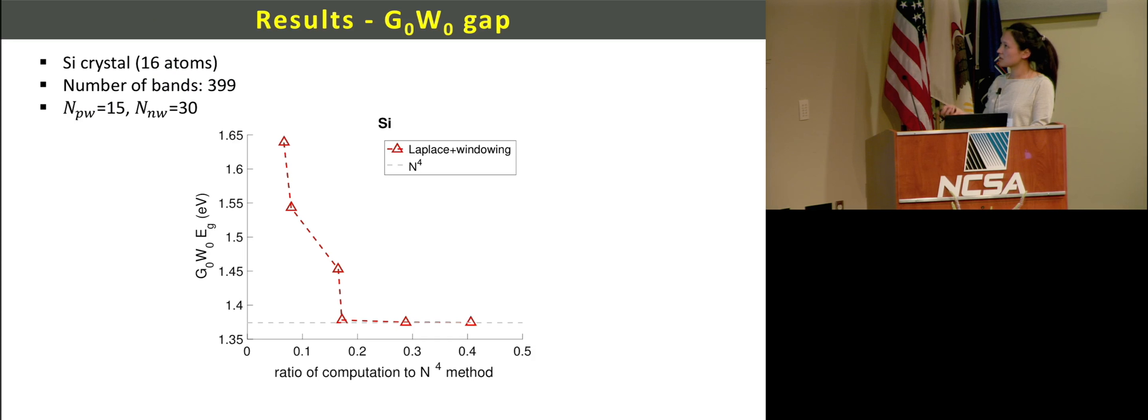This is the result of G0W0 gap using the windowing method for the dynamic self-energy. This is the 16 atom silicon crystal, and the number of bands are 399. The number of windows for this method is 15 for the pole and 30 for the state part. It's a little more windows for this self-energy, but we can still save a lot of time employing this new quadrature and windowing method.